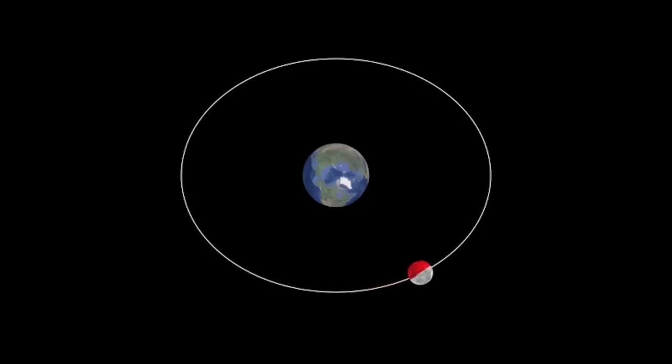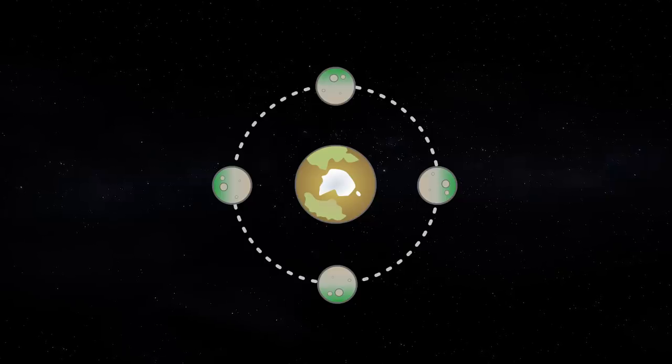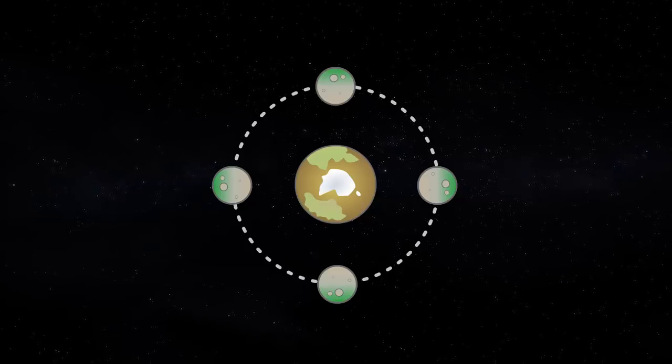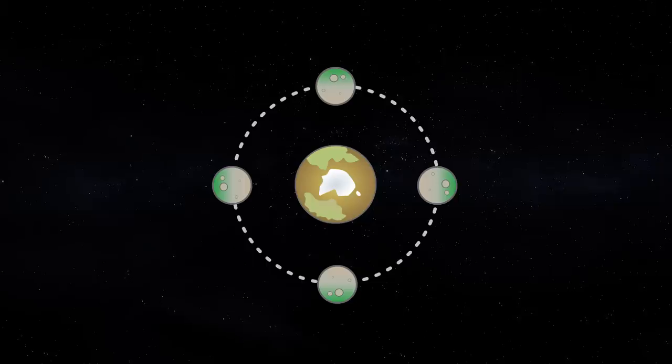Like our own moon, Titan is tidally locked in synchronous rotation above Saturn's equator. This means it always shows the same face towards Saturn, and its day is equal to its orbital period.